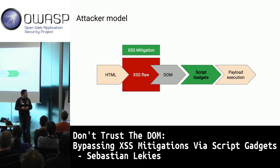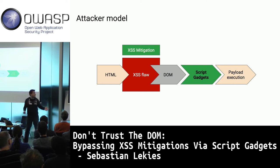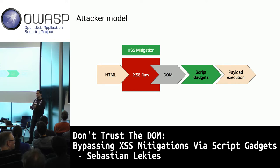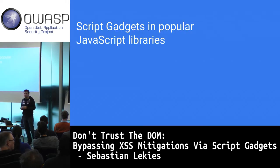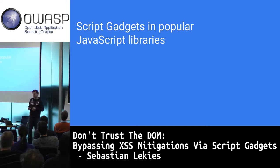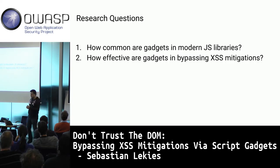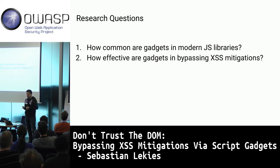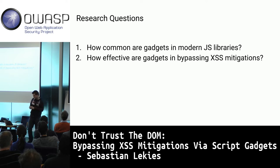We found this phenomenon in one or two examples and then wondered: how widespread is this? How often do script gadgets exist in pages? Is this isolated or a bigger issue? So we did a quantitative manual analysis of popular JavaScript frameworks, wanting to answer how common these gadgets are and how effective they are in bypassing mitigations.